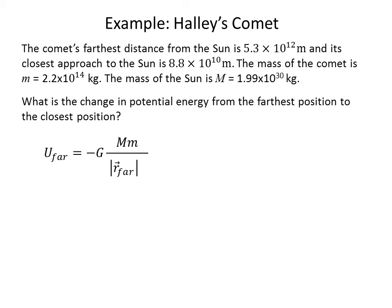Well, U sub far is equal to minus G times the product of the two masses divided by the separation of the two objects. U near is very similar. It's minus G times the same product of the masses divided by the separation at the near point.